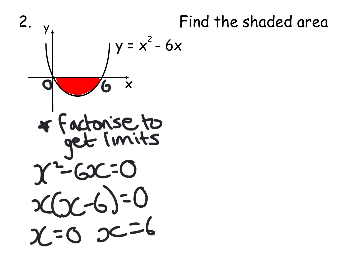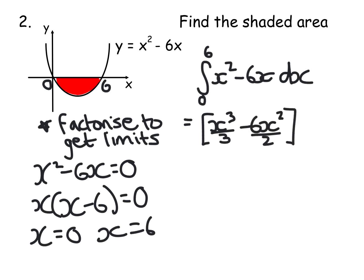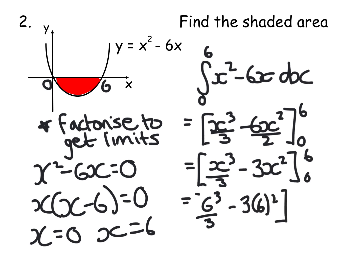So when setting up the question, this is integral from six to zero of your equation dx. Now, when we integrate this, we get x to the power of 3 over 3 minus 6x squared over 2. So let's tidy that up. So x cubed over 3. 6 over 2 is just 3, so 3x squared. When I plug in the number 6, I get 6 cubed over 3 and take away 3 times 6 squared. When I plug in the zero, I just get zero, so let's just leave it at that.